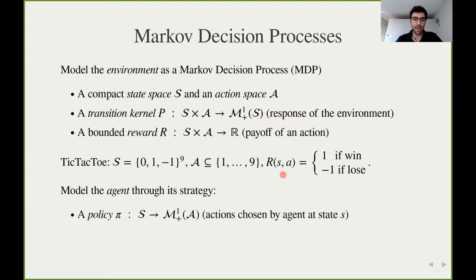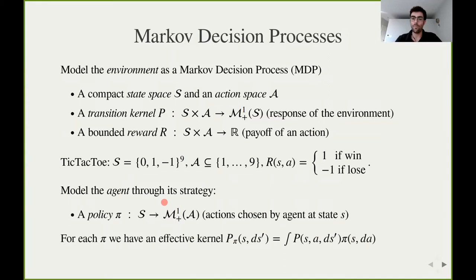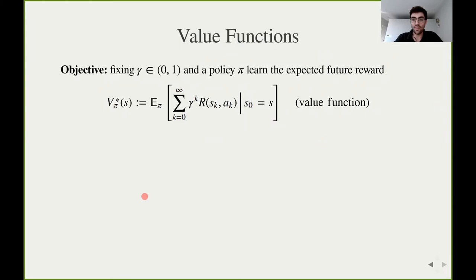The agent is represented through its strategy or policy, which is simply a function that maps a certain state to the distribution of actions of the agent in that state. Combining this with the transition kernel introduced before results in a dynamics purely on state space, so for any fixed policy we have a transition kernel given by p_pi. This in turn allows us to define a central function in reinforcement learning called the value function, which quantifies how good a certain state is in terms of the expected future rewards — mapping, for a fixed policy pi, a certain state to the expected sum of future rewards under the dynamics induced by pi.